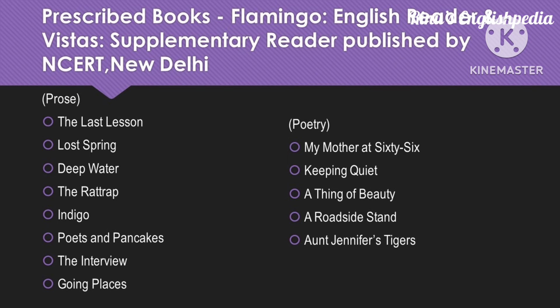With this we come to the books prescribed by NCERT Delhi. The first book is Flamingo, which is your English reader, and the second is Vistas, which is your supplementary reader. From Flamingo, the prose chapters are: The Last Lesson, Lost Spring, Deep Water, The Rat Trap, Indigo, Poets and Pancakes, The Interview, and Going Places.